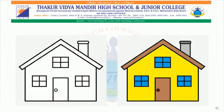I am sure you all must have guessed the answer. The second picture of the house looks beautiful. And you all know why? The second picture looks pretty because of the colours in it, whereas the first picture, which is without colours, does not look attractive.